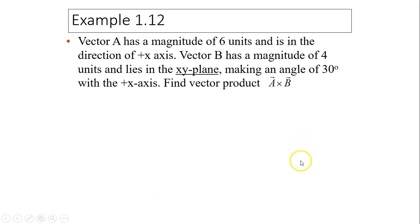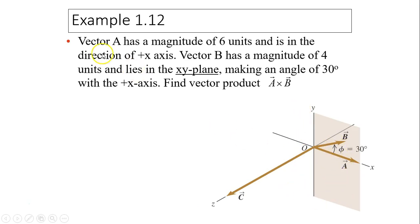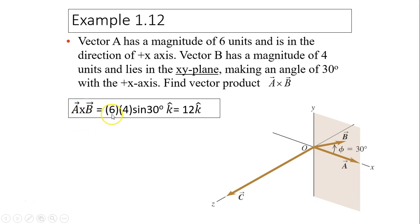Let's look at an example. Vector a has a magnitude of 6 units and is in the direction of the positive x-axis. Vector b has a magnitude of 4 units and lies in the xy-plane, making an angle of 30 degrees between the two vectors. What is the vector product a cross b? a cross b equals 6 times 4 times sine 30°, which gives 12. Using the right-hand rule, the direction is k. So the answer is 12k.